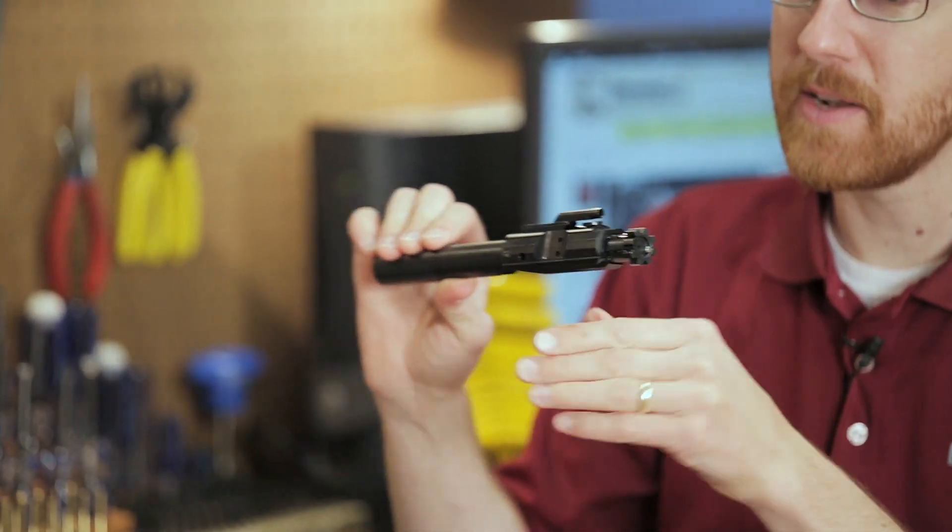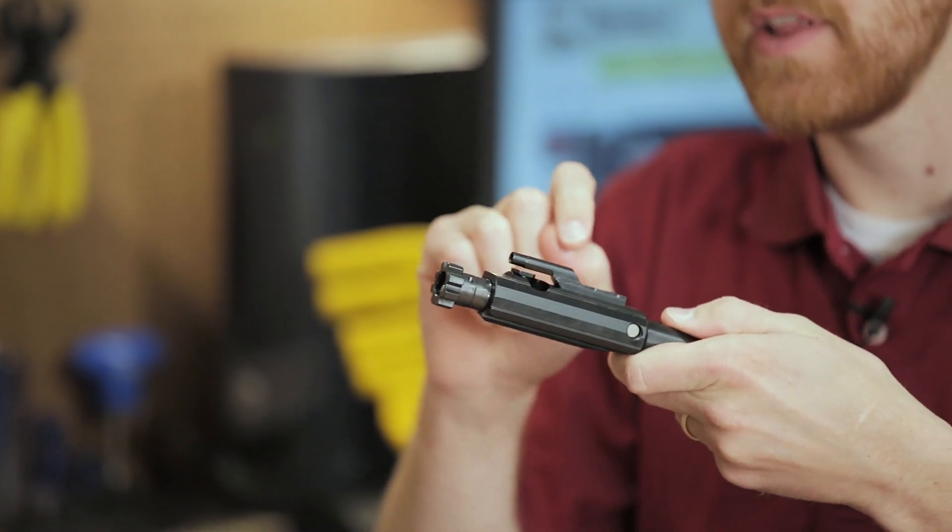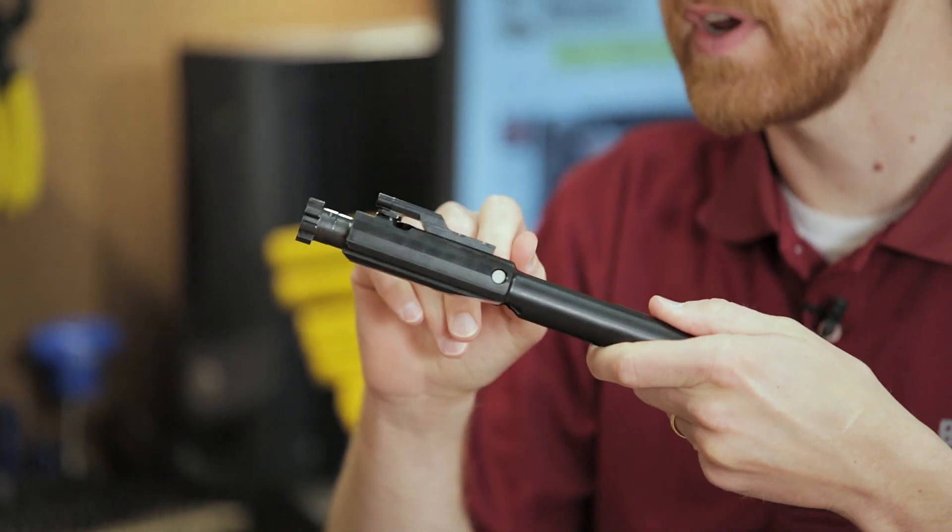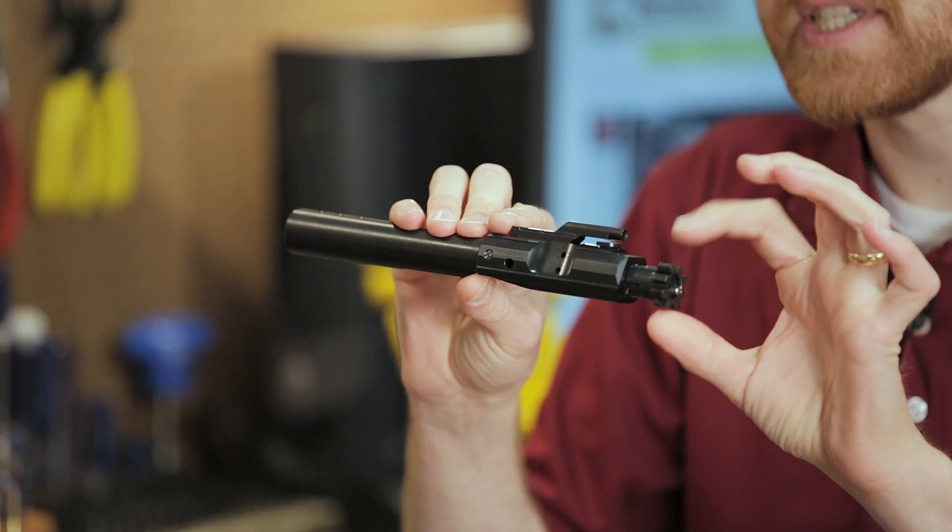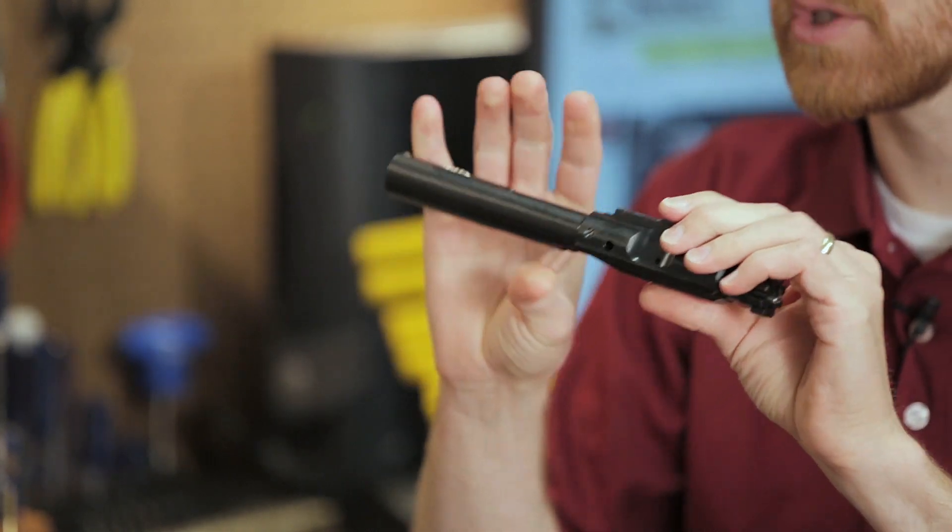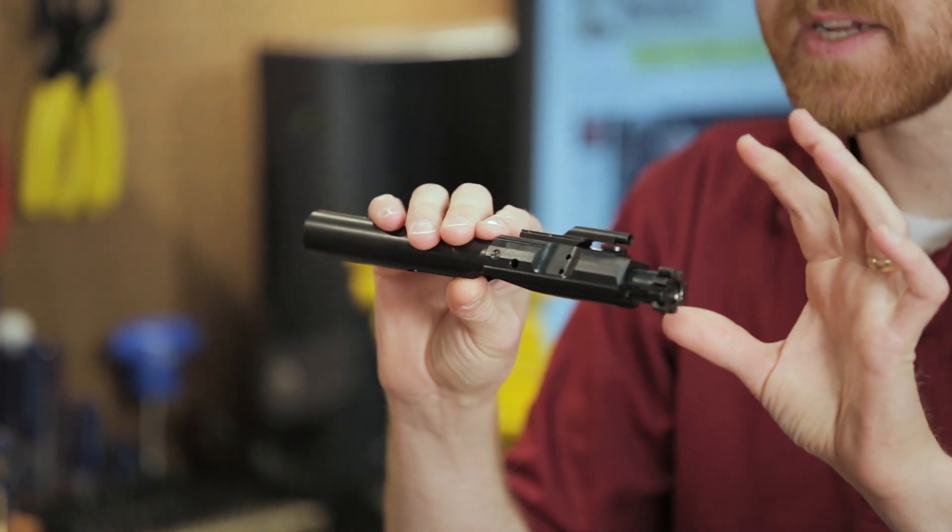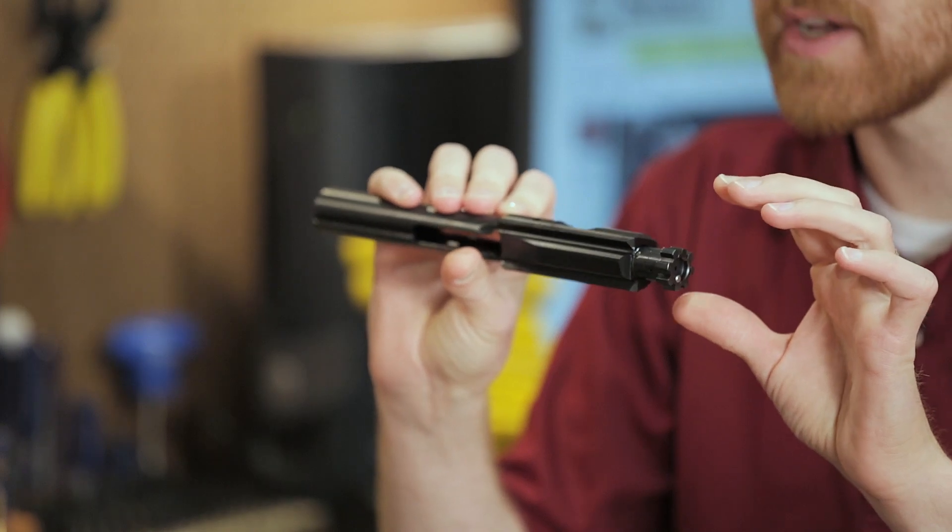Everything's nitrided on it. We're going to have another version that has a standard mil-spec phosphate coating chrome line interior. This one we got in here first. 9310 bolt 8620 carrier. All the great specs that you ask for from our products.